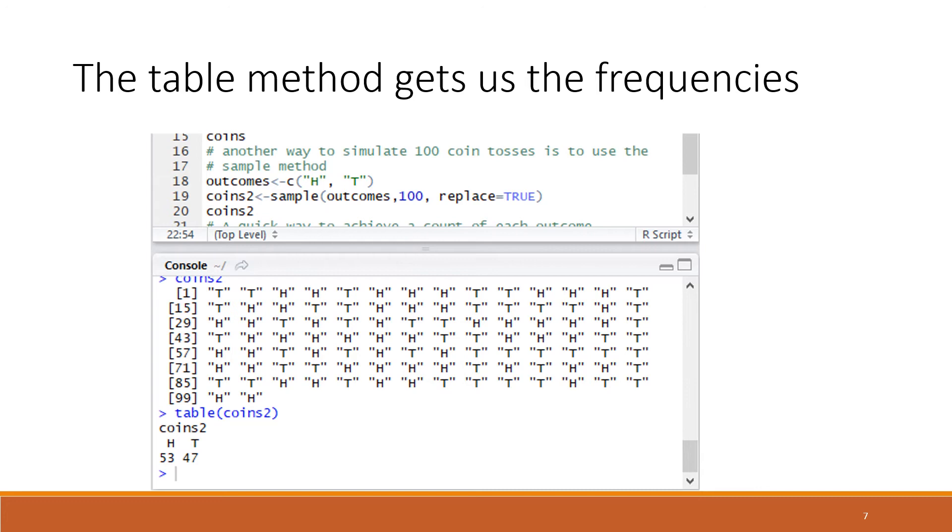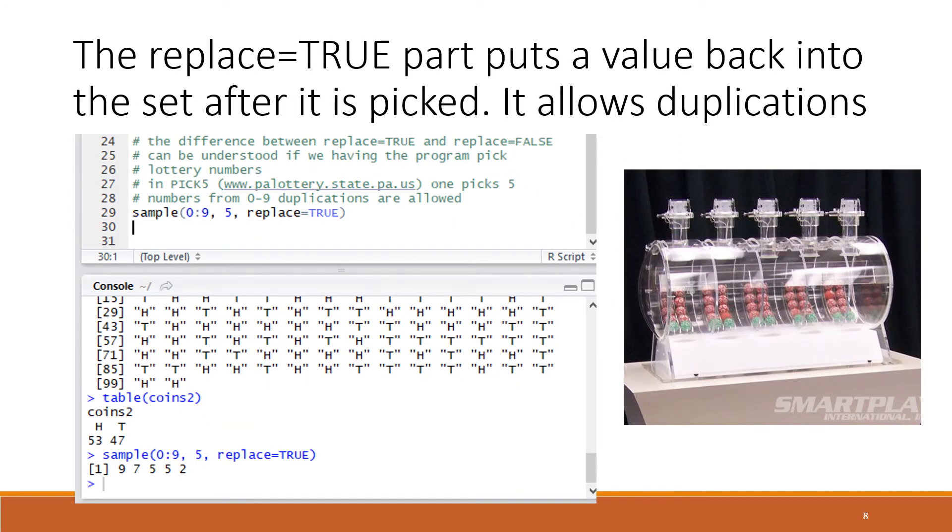I want to explain this replace true or replace false argument that occurs in the sample function using two different lottery examples. One game is Pick Five: you have the regular digits 0 through 9 and you're picking five of them, but two of the numbers can be the same, so replace equals true. This allows for duplications. You pull the first number, it's a 9, then pick the next number, it's a 7, then pick the 5. Each time you pick, those numbers are put back into what you're choosing from so you can choose them again. You can see that 5 was chosen twice.